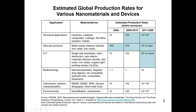Then we have materials like nano-encapsulates, targeted drug delivery systems, biocompatible quantum dots, composite biosensors — materials particularly designed for biotechnology applications. Their production was very low compared to previous categories: less than 1 metric ton per year in 2004, estimated at 1 metric ton per year from 2005 to 2010, and 10 metric tons per year from 2011 to 2020.